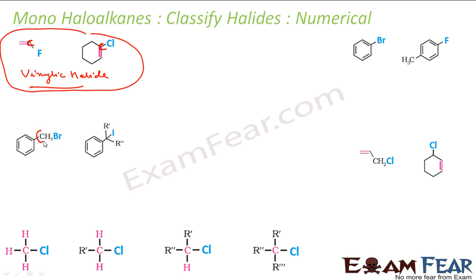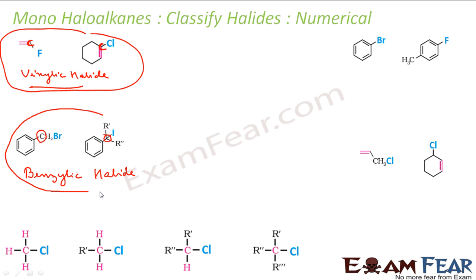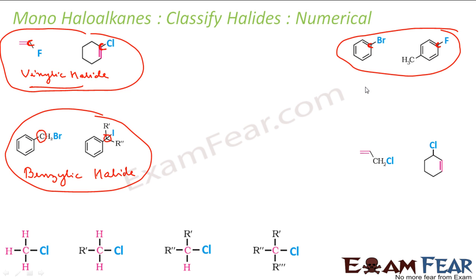Next examples: here the hero carbon is attached to a benzene ring — so these are benzylic halides. In the following examples, the hero carbon is itself part of the benzene ring, meaning the halogen is directly attached to the aromatic ring — so these are aryl halides.